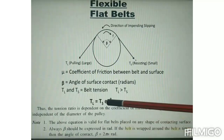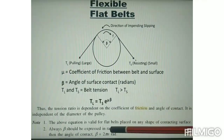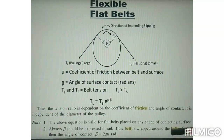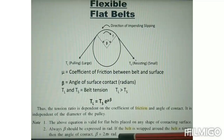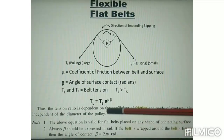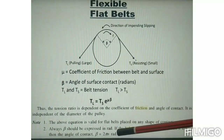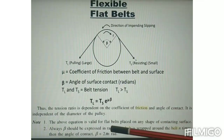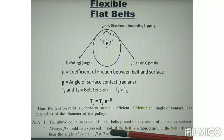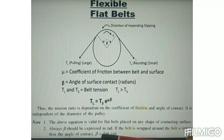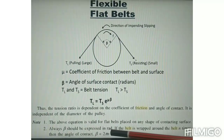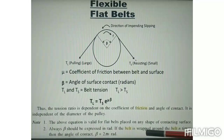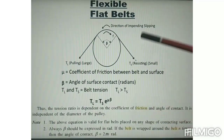The angle β must be expressed in radians. If the belt is wrapped around the pulley n times, then the angle of contact β = 2πn radians, where n is the number of times the rope or belt is wrapped around the pulley. For example, if n = 1 (one revolution), β = 2π radians; if n = 2, β = 4π radians. Similarly, you can calculate β for any number of turns.